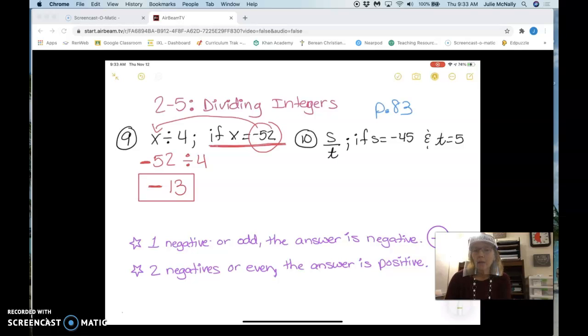So for number 10, again, they give us two variables, s and t. And they say evaluate this if s equals negative 45 and t equals 5. So I'm just plugging in, instead of s and t, I'm putting these numbers.